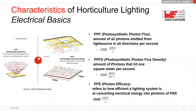The third parameter is PPE — Photon Efficacy — which refers to how efficiently a lighting system converts electrical energy into photons. The unit is micromole per joule. In plant lighting, lumen or lux do not play a really important role. PPF is comparable to lumen in human lighting, PPFD is comparable to lux, and PPE is comparable to lumen per watt. These three parameters are the important ones in plant lighting.